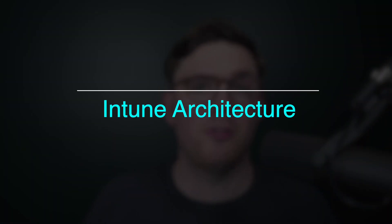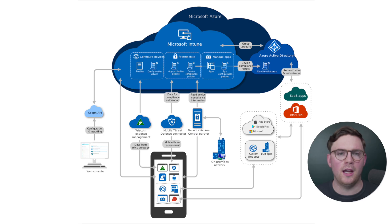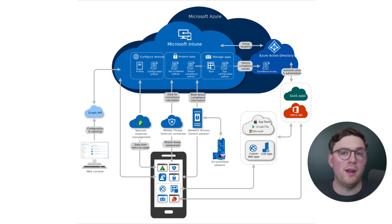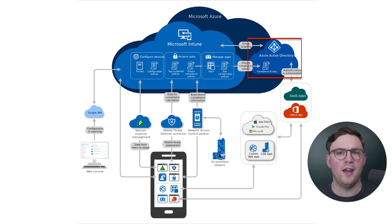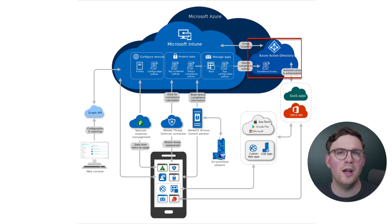The next thing I want to show is a high-level reference architecture for Microsoft Intune, taken from the Microsoft documentation. At the top we've got all our cloud-based applications, and at the bottom we have the device and the web console. On the right-hand side at the top, we have Azure Active Directory, which handles all of our authentication and authorization — whether it's Office 365 applications like Outlook, Teams, or OneDrive, or cloud-based applications that your company uses.